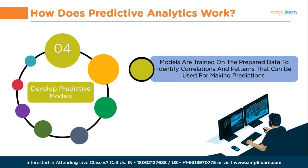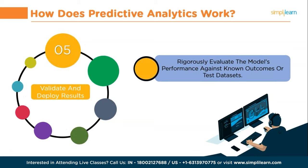Next, you have to develop predictive models. Data scientists or data analysts leverage a range of tools and techniques to develop predictive models based on the problem statement and the nature of the dataset. Machine learning algorithms, regression models, decision trees, and neural networks are among the commonly used approaches. These models are trained on the prepared data to identify correlations and patterns that can be used for making predictions. Finally, validate and deploy results. Model validation is a critical step to assess the accuracy and reliability of predictions. Data scientists rigorously evaluate the model's performance against known outcomes or test datasets. If necessary, adjustments are made to improve the model's accuracy. Once the model achieves satisfactory results, it can be deployed to deliver predictions to stakeholders through applications, websites, or data dashboards, making the insights easily accessible to decision-makers.